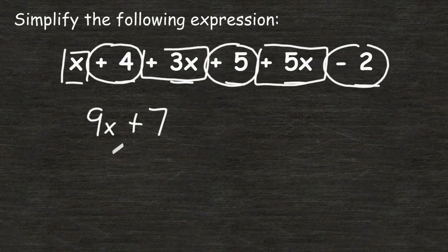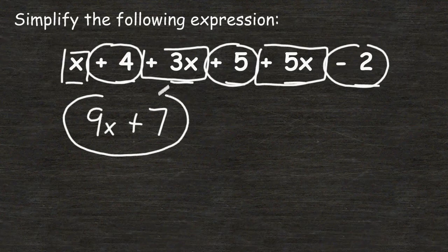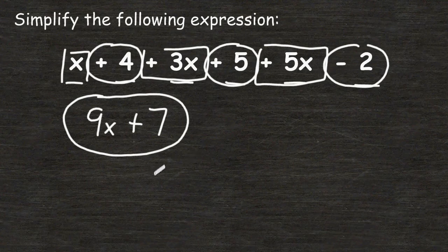Now 9x and 7 are not like terms, so they cannot be combined. So we have simplified our expression as far as we can go. The shown expression can be simplified to 9x plus 7.